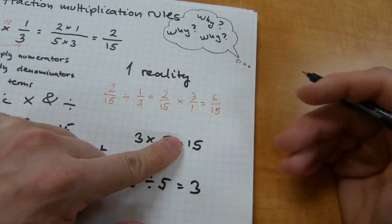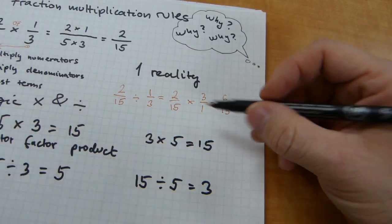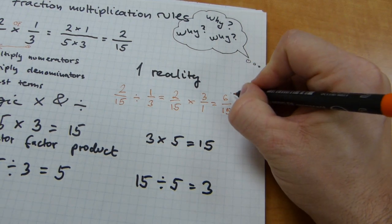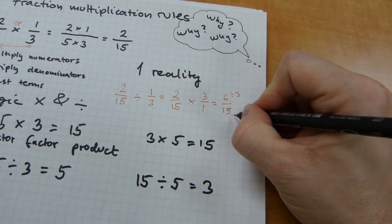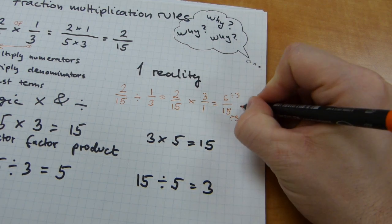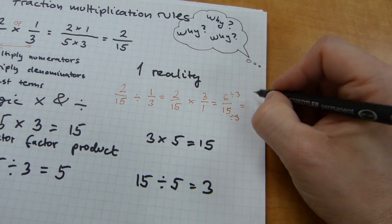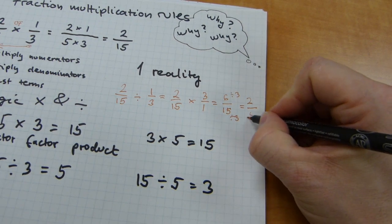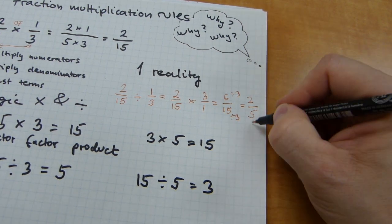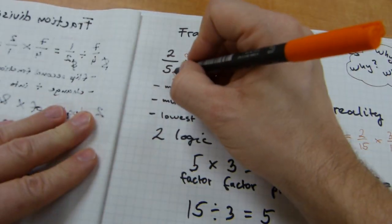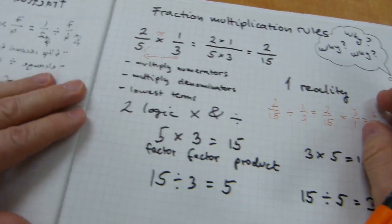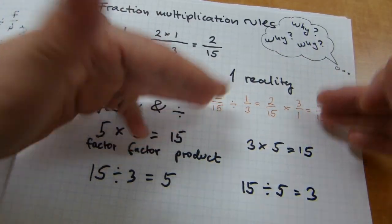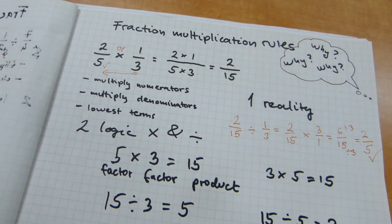2 by 3 is 6, and 1 by 15 is 15. 6 over 15 is the answer for this division problem, but 6 is divisible by 3, and 15 is divisible by 3, so if I write divide by 3 there, and divide by 3 there, I'm just reducing this fraction to lowest terms. 6 divided by 3 is 2, and 15 divided by 3 is 5. The final answer here, 2 over 5 is the same as the other factor that we had when we started the multiplication.